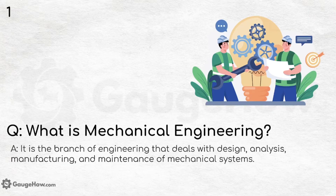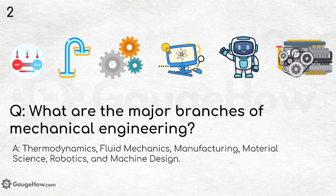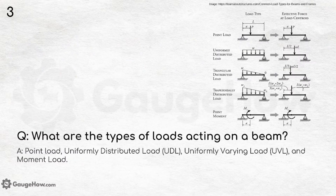What is mechanical engineering? It is the branch of engineering that deals with design, analysis, manufacturing and maintenance of mechanical systems. What are the major branches of mechanical engineering? Thermodynamics, fluid mechanics, manufacturing, material science, robotics and machine design.